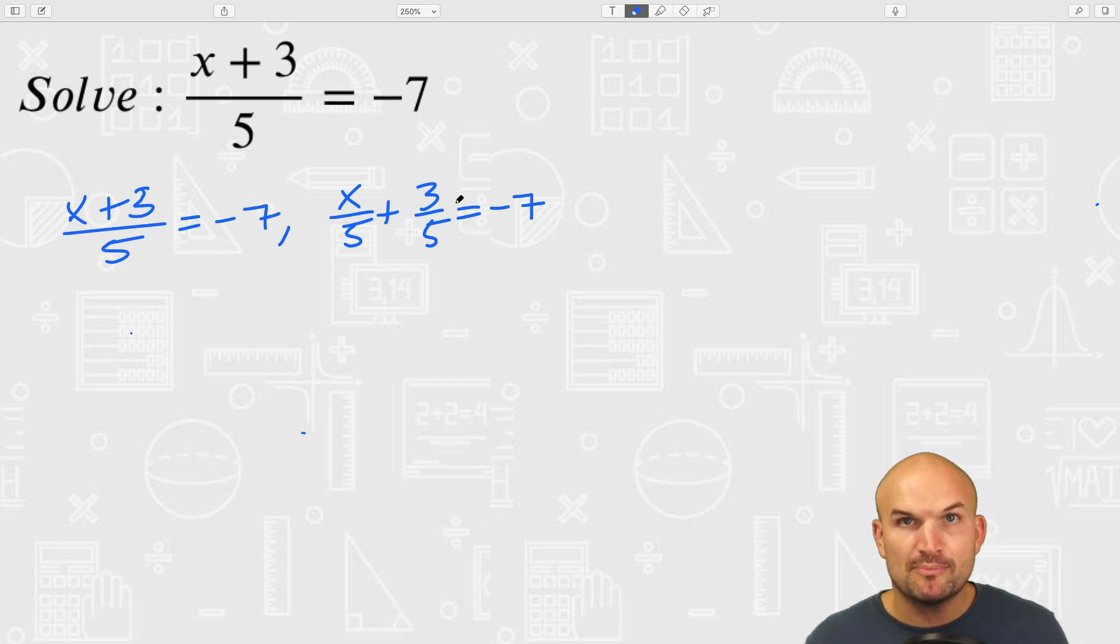Now this idea of distributive property, a lot of times students just think of distributive property as multiplication. But we also know that any division problem can always be written as a multiplication problem. So if I have x plus 3 that's being divided by 5, instead of dividing by 5 I can multiply by the reciprocal.